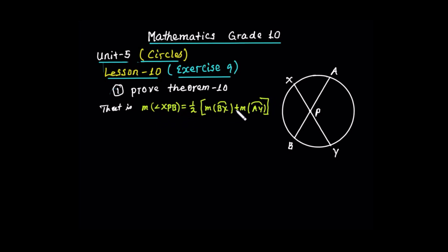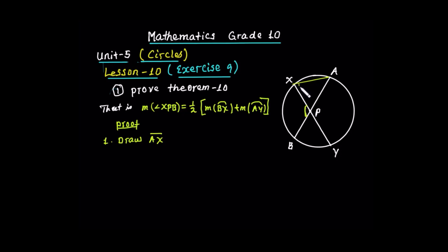Let's prove this. Step 1: Draw AX by construction. In triangle XAP, the exterior angle is equal to the sum of the two non-adjacent interior angles — this is the exterior angle theorem.